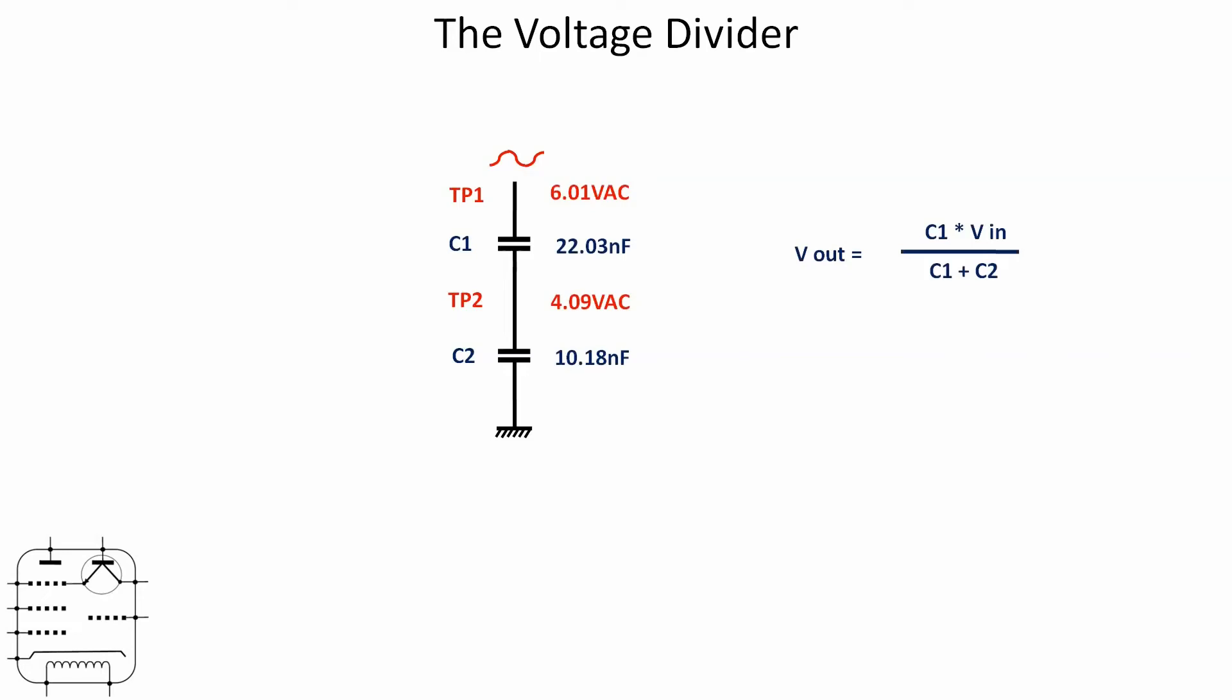The equation then for the voltage out is C1 times V in divided by C1 plus C2, so very similar. If you plug those numbers into the equation, if you're a bit concerned with math, don't panic. What you need to remember here is that the equation is expecting the numbers to be in farads and volts. Nanofarads is 10 to the minus 9, so just to make life easier, using scientific notation, we've got 22.03 times 10 to the minus 9 and 10.18 times 10 to the minus 9 as the two capacitor values in farads. Plug those into a scientific calculator, press equals, and the answer we get is 4.1. We were getting 4.09, I think that's good enough.